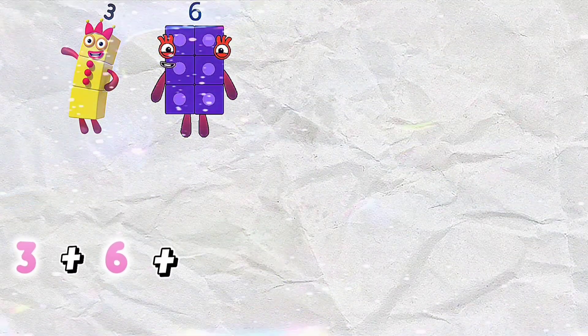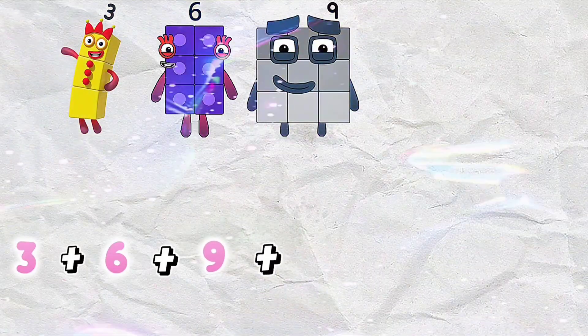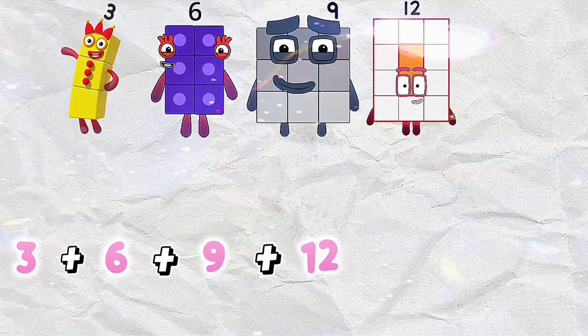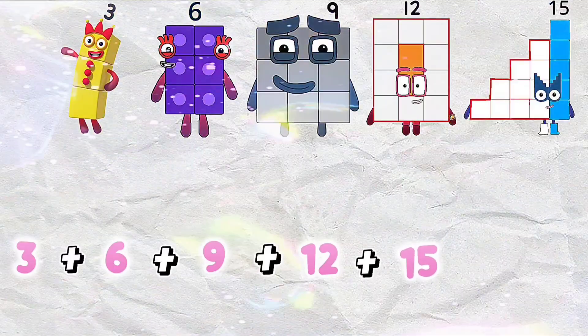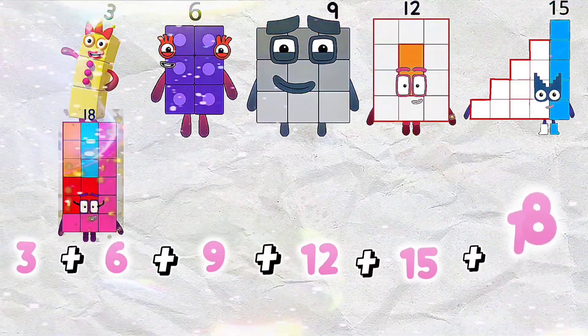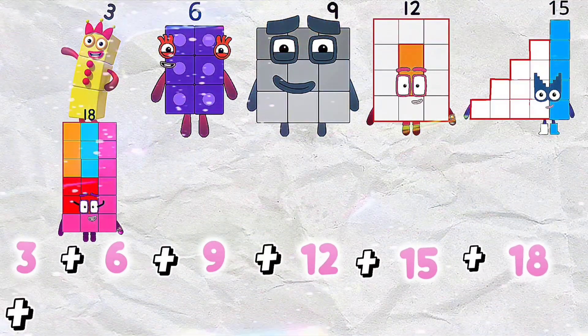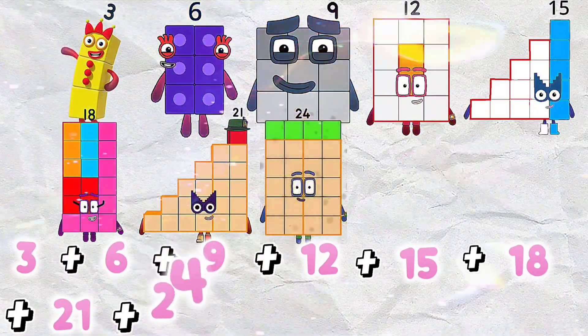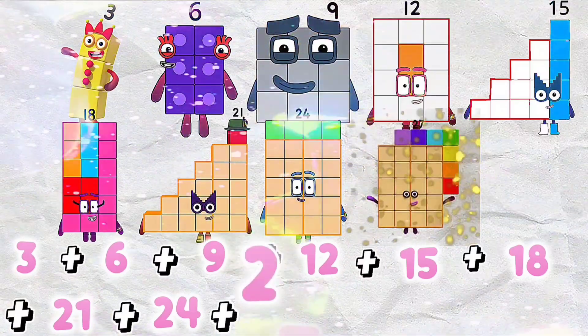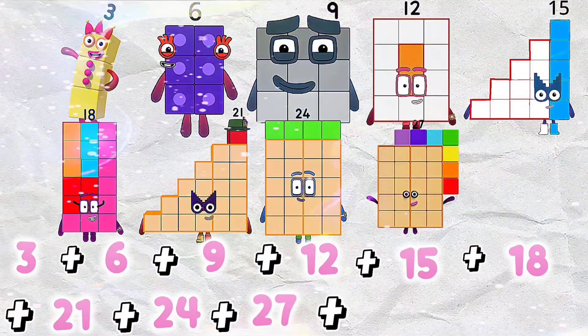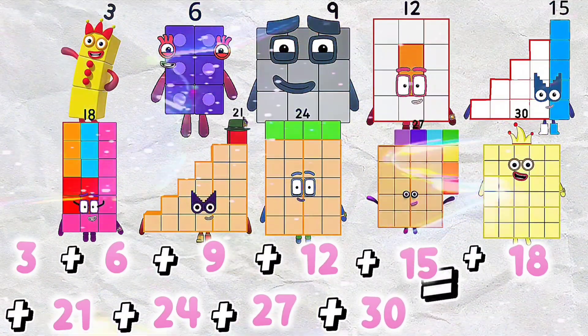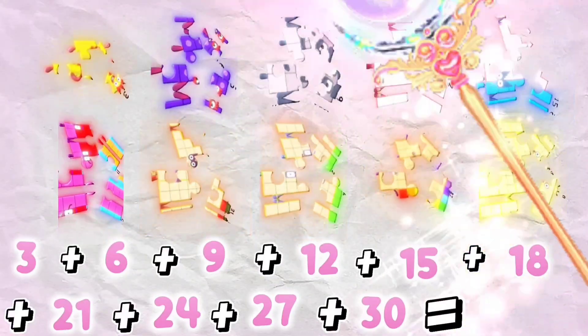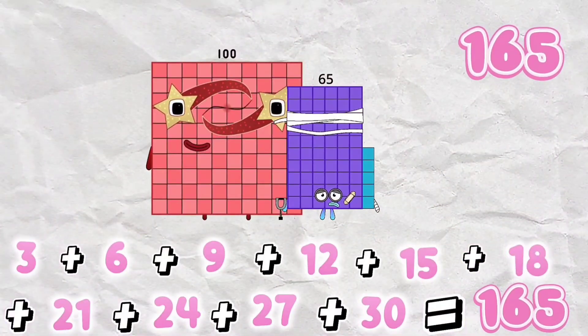Let's go. 3 plus 6 plus 9 plus 12 plus 15 plus 18 plus 21 plus 24 plus 27 plus 30 is equals to 165.